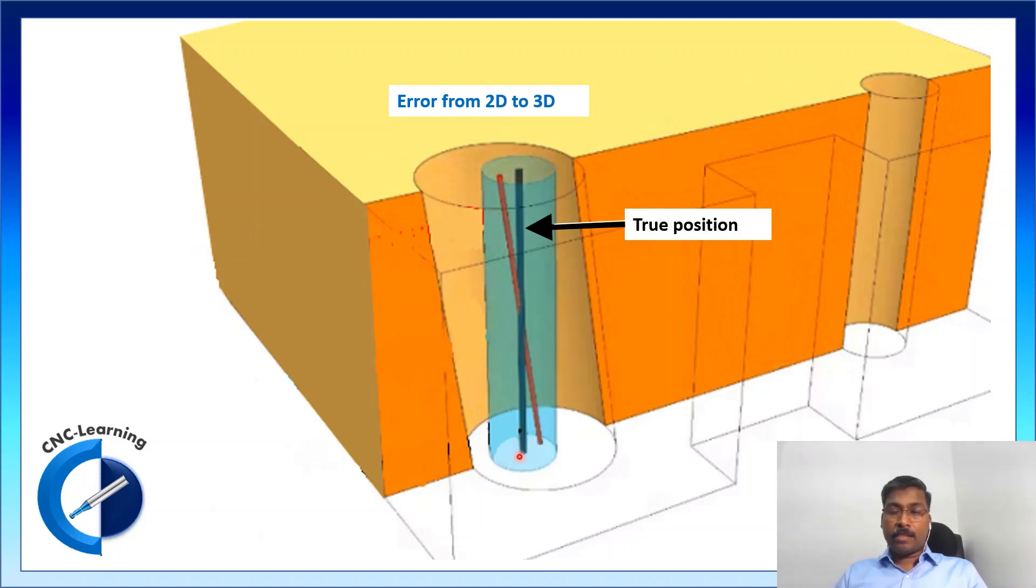This axis is the true position. So, this is the true center on this plane. And this is the true center on this plane. So, the connecting line is true position axis.